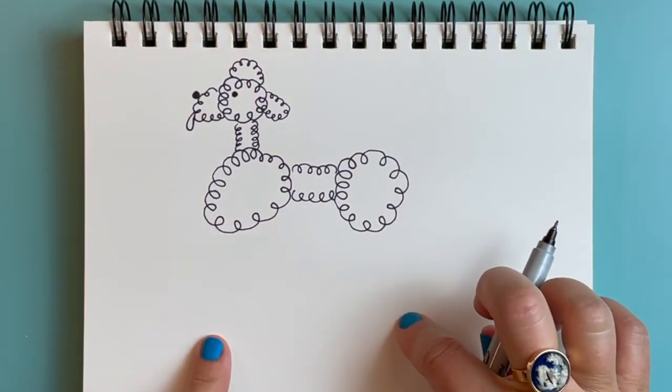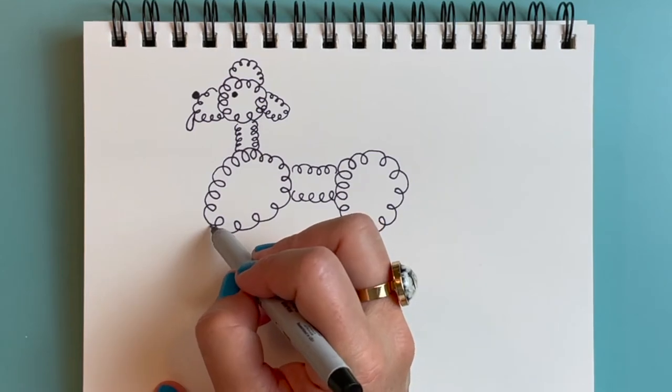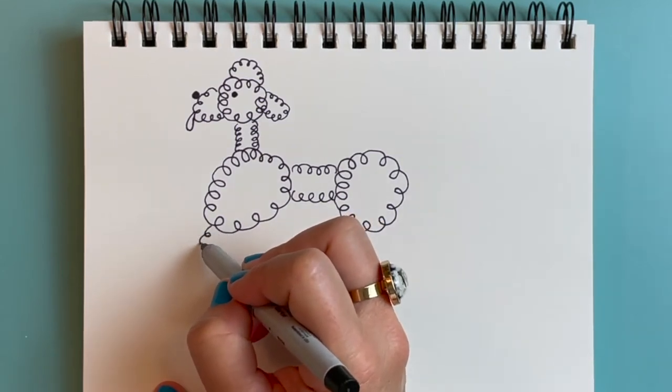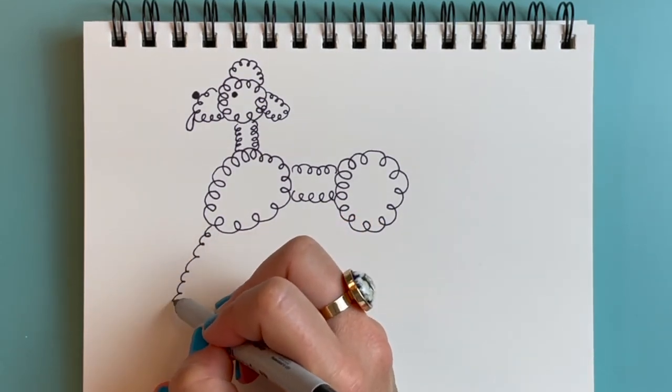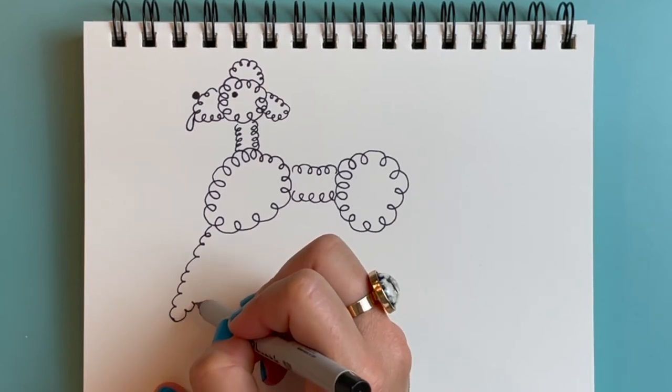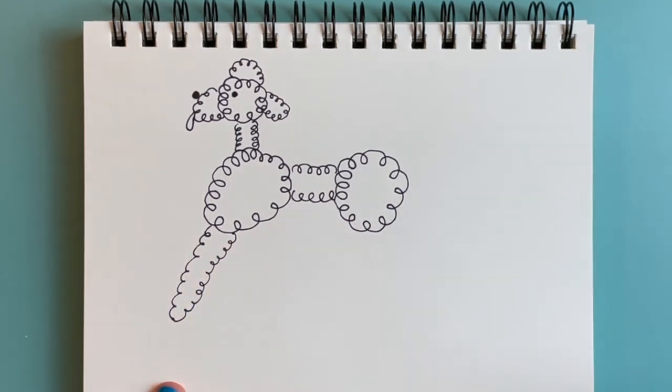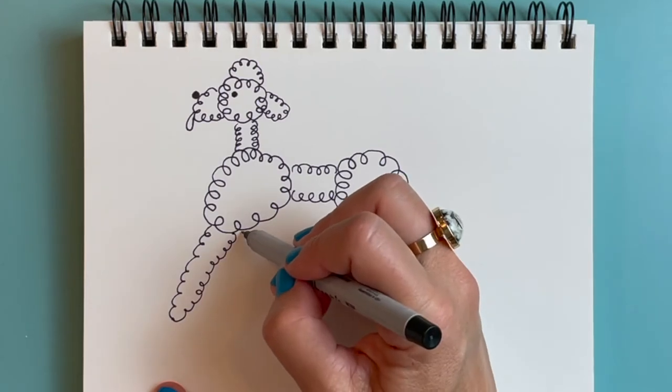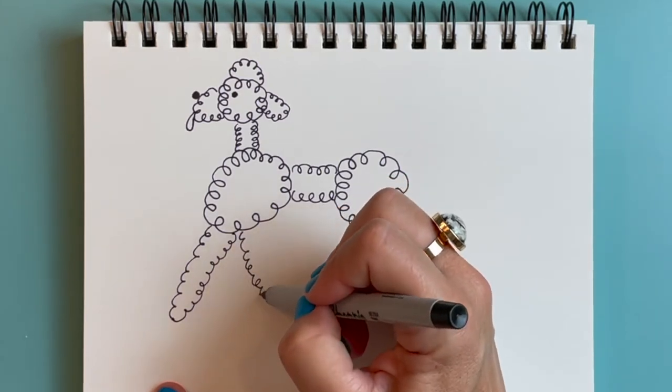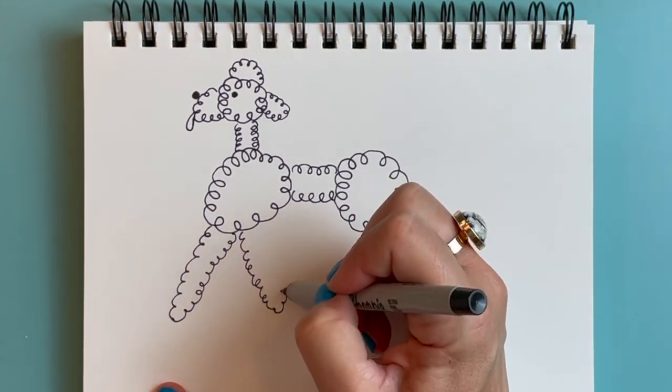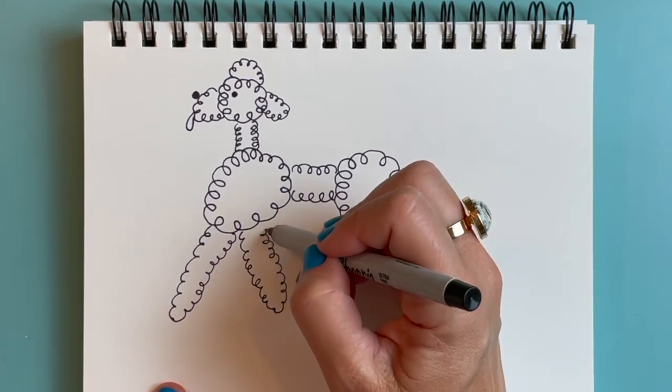Next our poodle needs some legs. So I'm going to draw one curly leg coming down this way. And another curly leg coming down this way.